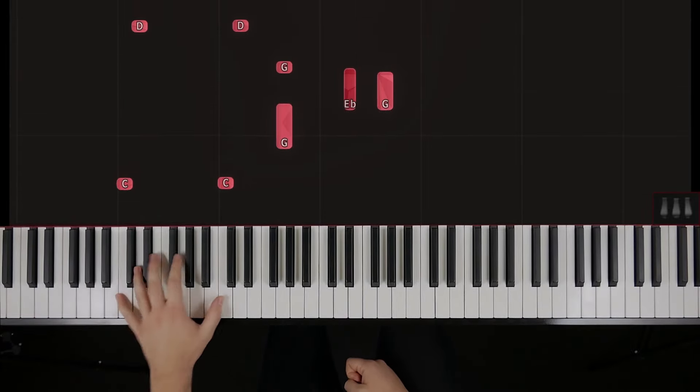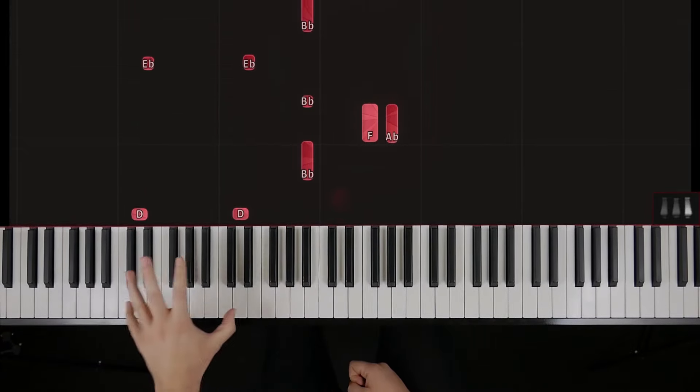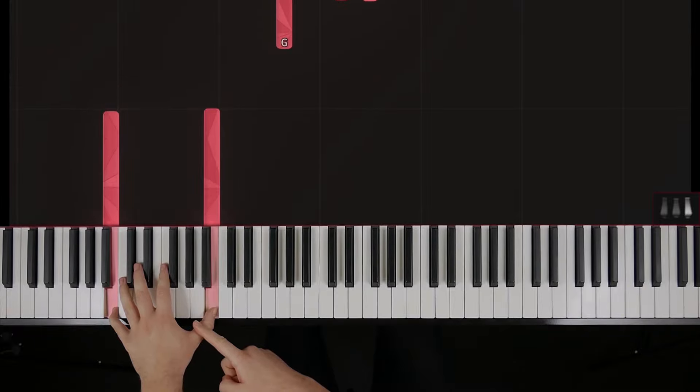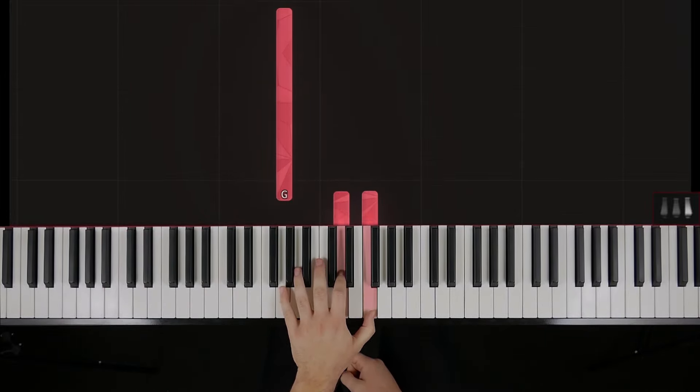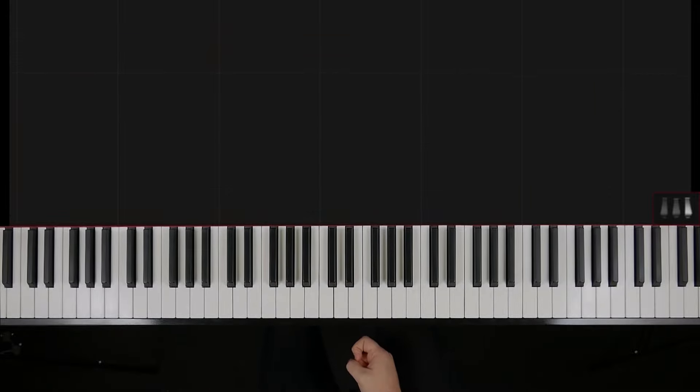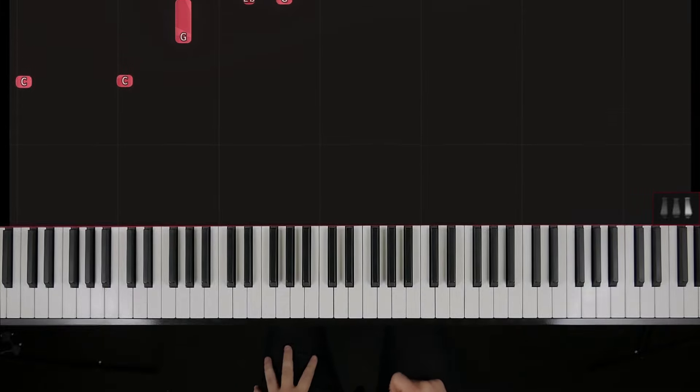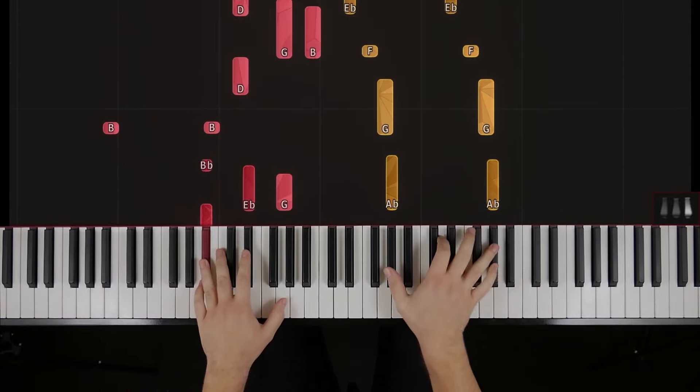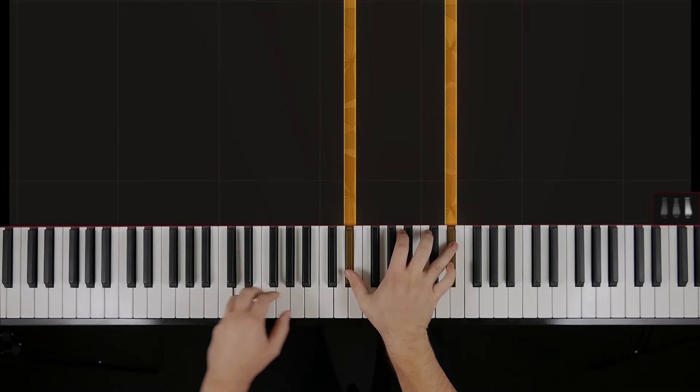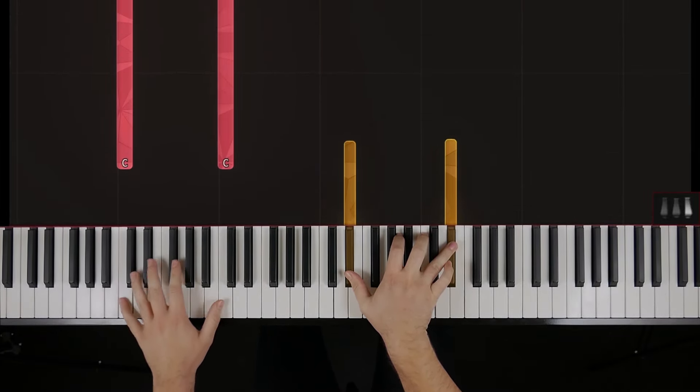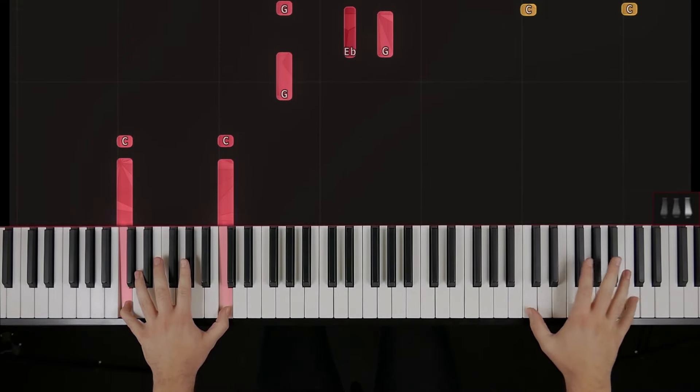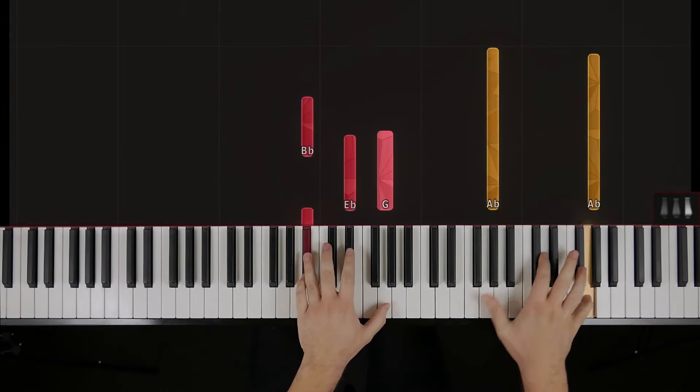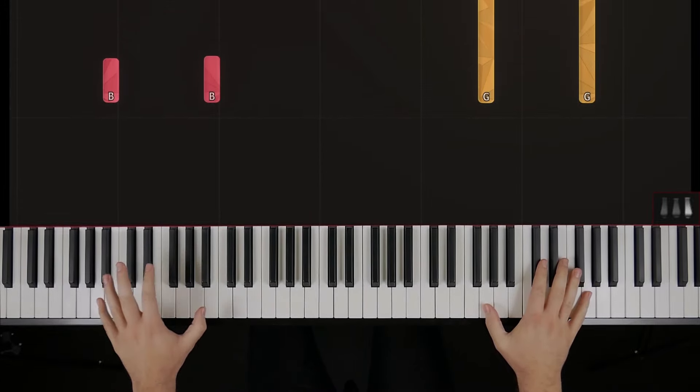And then from there, you do the same thing you had before down here but one octave higher, except that the B now is in the same place it was before. And then this begins pretty much the same way but an octave higher, and this is an octave higher as well to make room. Left hand drops to B there.